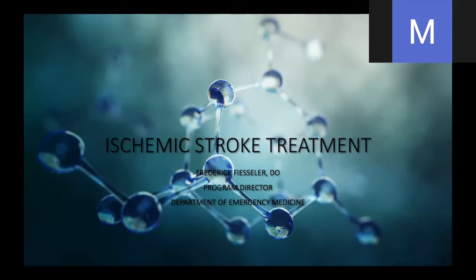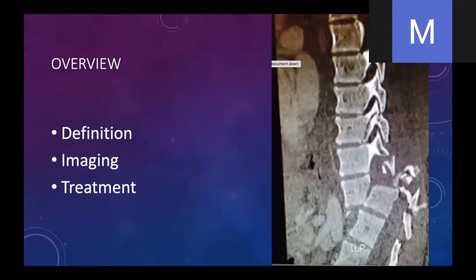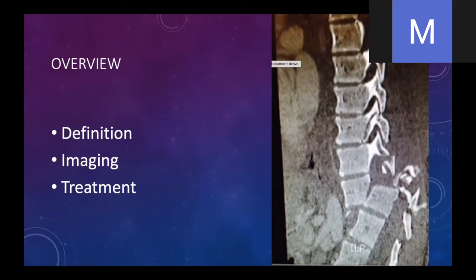Ischemic stroke is a very devastating disease. It's the leading cause of disability for patients related to a medical disease, and it oftentimes can be fatal. Can we make a difference? We can. So the definition is really an acute obstruction or blockage or lack of blood flow to an area of the brain, and some people would extend that to the eye or the spine. Some of the presentations will be obvious, and some will be very subtle when trying to determine if the patient has a stroke.